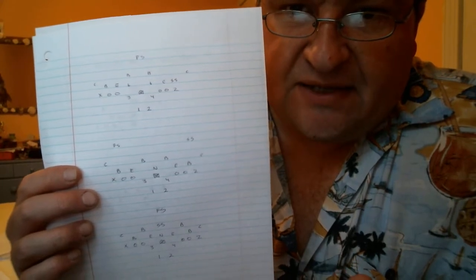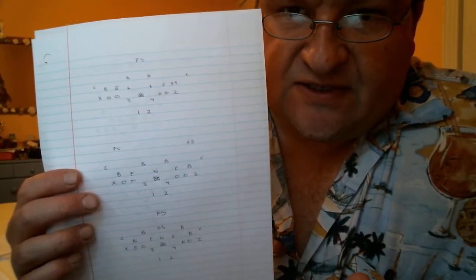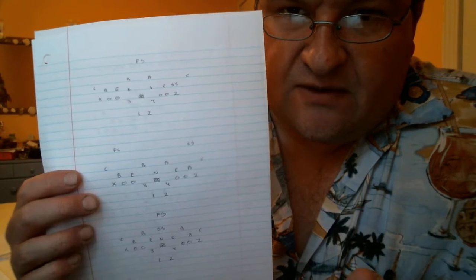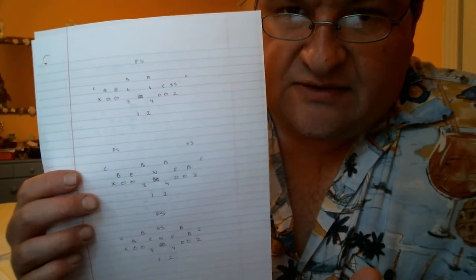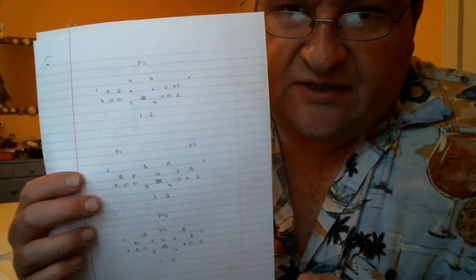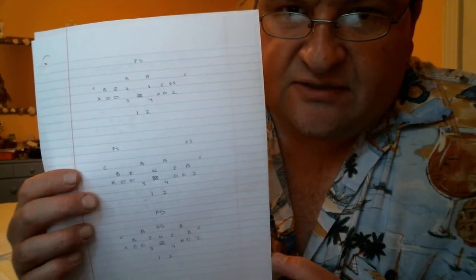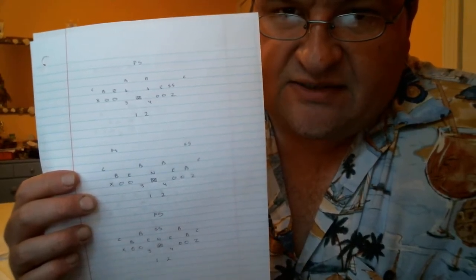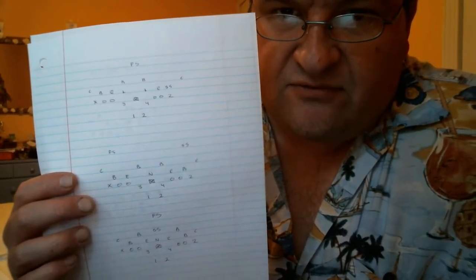I got a linebacker and a strong safety. Then I got a corner covering X and a corner shaded to the outside of strong safety covering Z. I got the stack backers inside. Then I got a free safety deep.